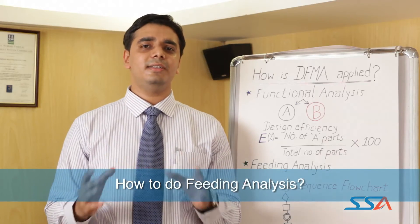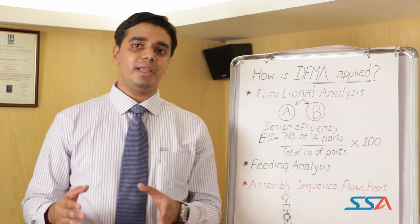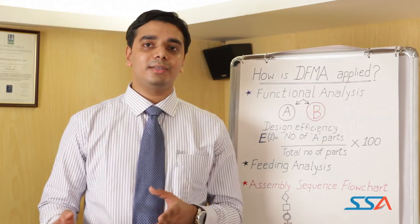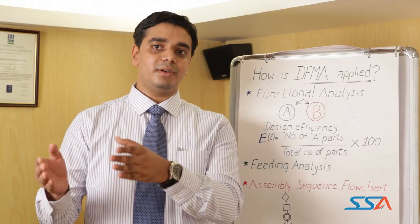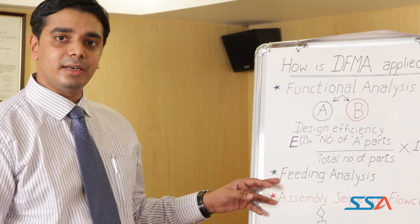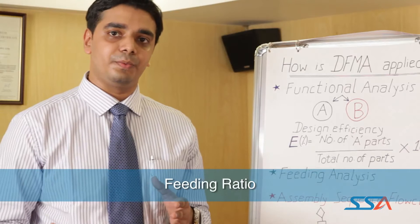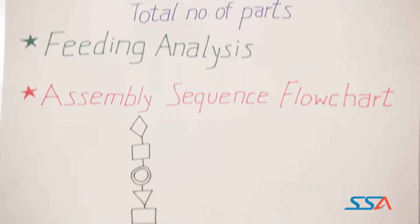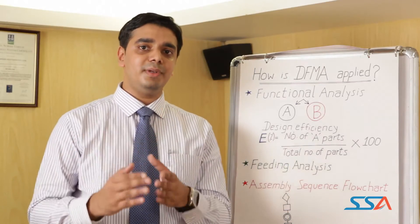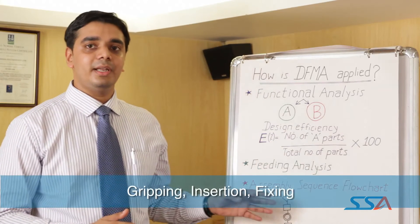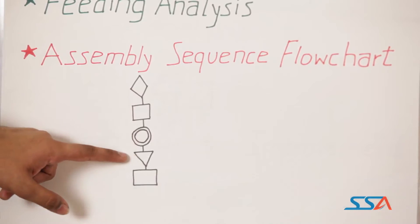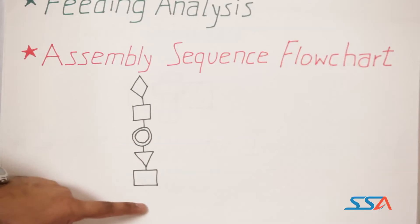Next is feeding analysis, which evaluates the easiness of a component design — how easy it is to feed through a conveyor or pass by hand from the point of manufacture to the point of assembly. After completing the feeding analysis, a feeding ratio is arrived at. Using the feeding ratio, an assembly sequence flow chart is developed, taking into account assembly sequences such as gripping, insertion, and fixing. Symbols are assigned to those sequences and the flow chart is plotted.